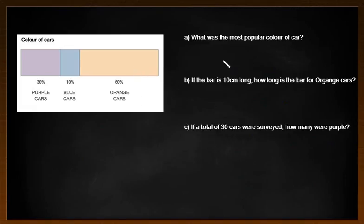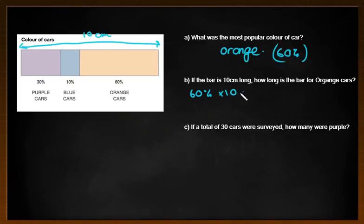Okay, so what was the most popular color of car? Well, hopefully you've said there that it would be the orange car, because that is 60 percent of all the data. If the bar chart is 10 centimeters long, so that means that whole length there is 10 centimeters, then it says what length would it be for the orange chart. Well, 60 percent times 10 is going to simply be six centimeters long. So it would be six centimeters long if I had to draw this accurately.